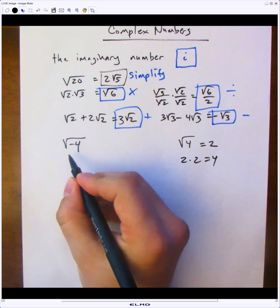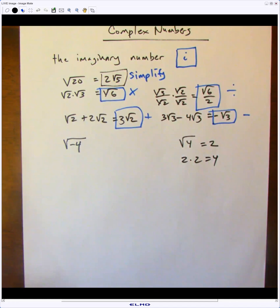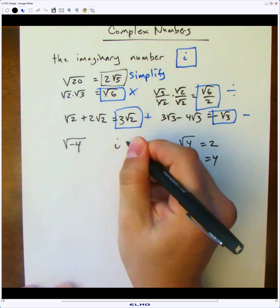So the way to handle this situation is by introducing an imaginary number called i, which has a specific value of square root negative 1.